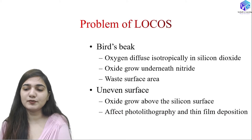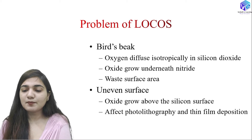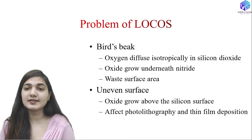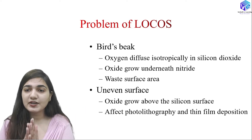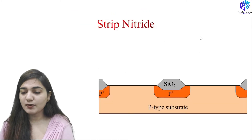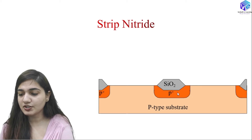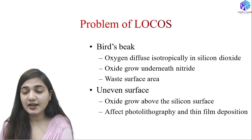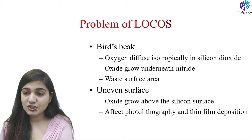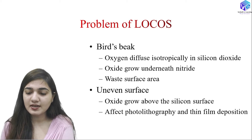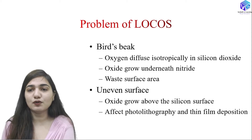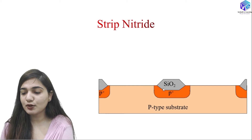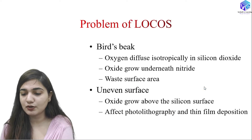Now coming to the problems of LOCOS — the bird's beak problem. The bird's beak occurs because oxygen diffuses isotropically in silicon dioxide, having the same rate of diffusion in every direction. Because of this isotropic diffusion, there is higher penetration that creates a bird's beak type structure, which is a V-type structure that is undesirable. Oxide grows underneath the nitride as well because of its isotropic diffusion nature, wasting surface area and creating an uneven structure.